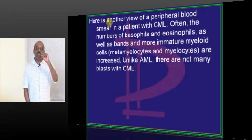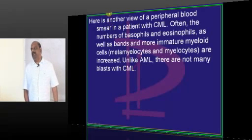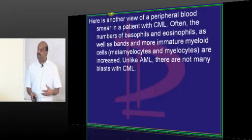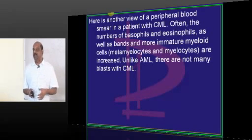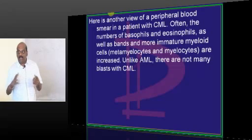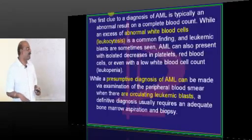How do you differentiate AML from CML? If it is acute myeloblastic leukemia, you call it acute when the number of blasts are abundant. Myeloblasts in CML are not that abundant, though they are there. That's the reason it comes under CML.